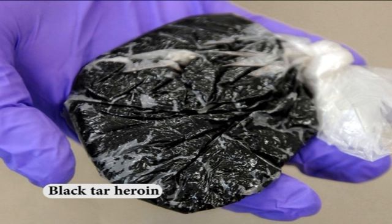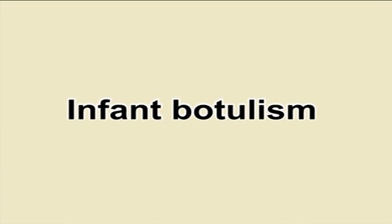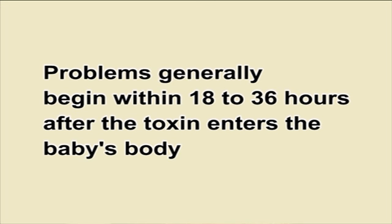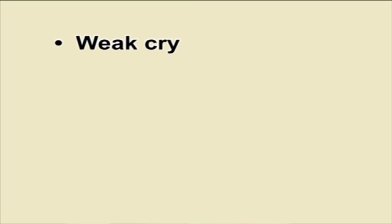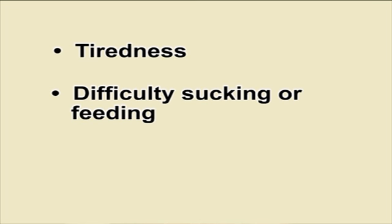Wound botulism. Most people who develop wound botulism inject drugs several times a day, making it difficult to determine how long symptoms take to develop. Most common in people who inject black tar heroin, wound botulism signs and symptoms include difficulty swallowing or speaking, facial weakness on both sides of the face, blurred or double vision, drooping eyelids, trouble breathing and paralysis. Infant botulism: if related to food such as honey, problems generally begin within 18–36 hours after the toxin enters the baby's body. Signs and symptoms include constipation (often the first sign), floppy movements due to muscle weakness, trouble controlling the head, weak cry, irritability, drooling, drooping eyelids, tiredness, difficulty sucking or feeding, and paralysis.